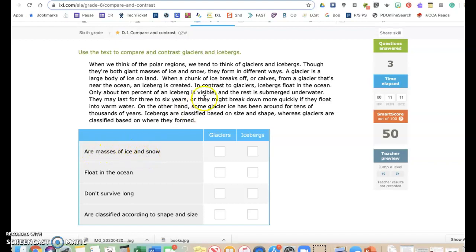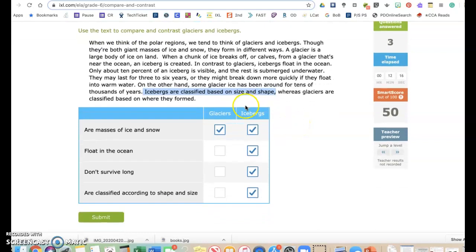So, let's see. Are masses of snow and ice? It says, though they're both masses of ice and snow. So, I would click both. Which one floats in the ocean? So, I think that's icebergs, but I'm going to check my text evidence. Icebergs float in the ocean. So, yep, icebergs don't survive long. Well, in the grand scheme of things, three to six years or more quickly, and that's icebergs. So, I would say that doesn't last as long as a glacier. Are classified according to shape and size. I'm looking back at don't survive long, because some glacier ice has been around for tens of thousands of years. Yeah. So, I can't mark glaciers there. Icebergs are classified based on size and shape, whereas glaciers are based on where they have formed. I feel pretty confident about this.